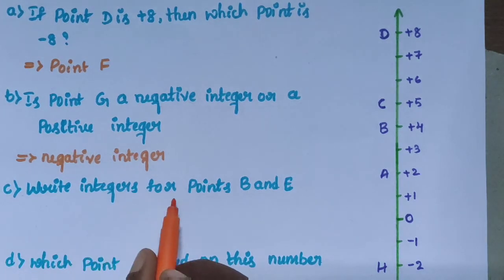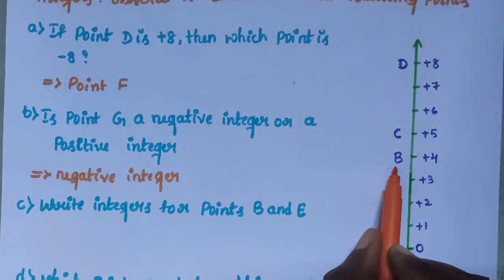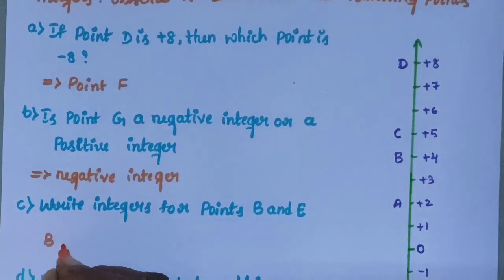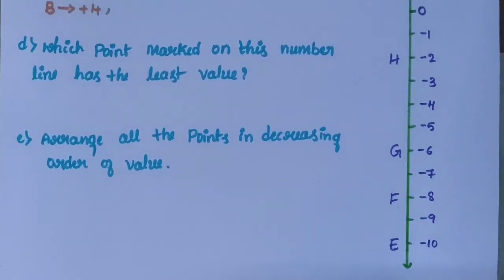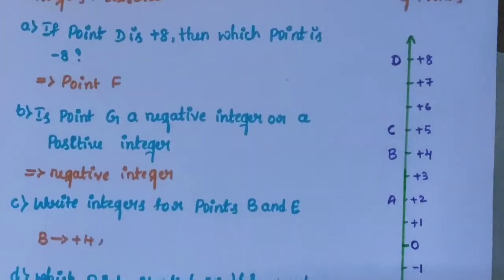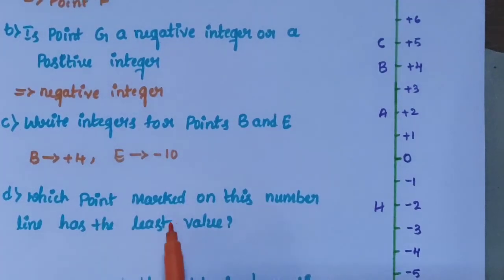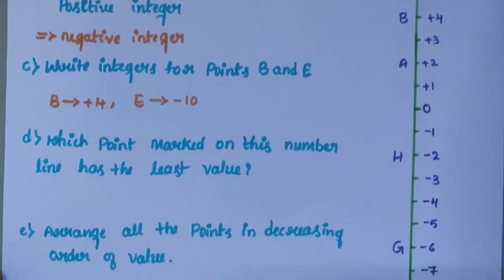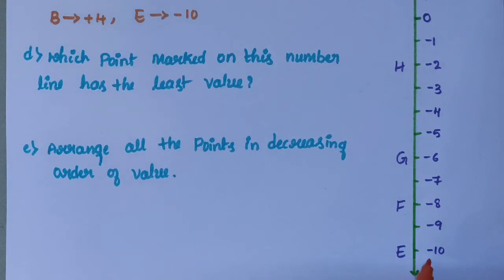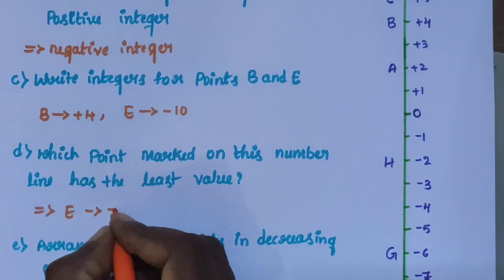Sub-question C: Write integers for points B and E. Observe the number line — point B is plus 4, and point E is minus 10. Minus 10 is the least value on the vertical number line, so point E is minus 10.